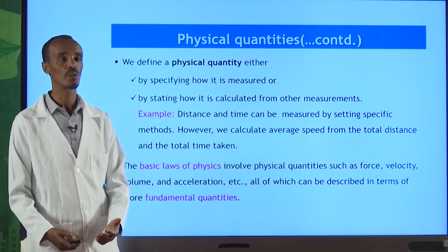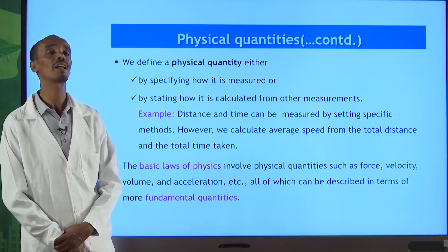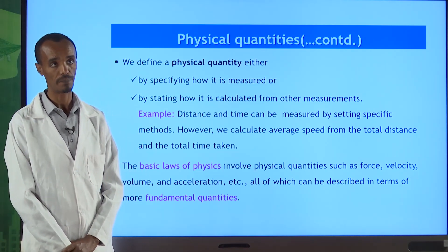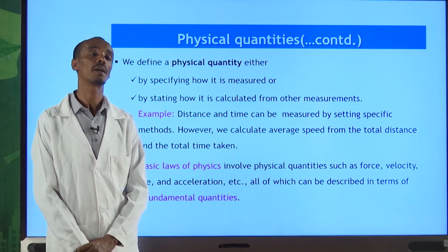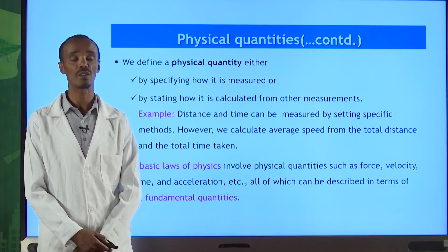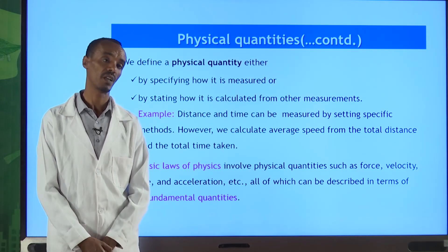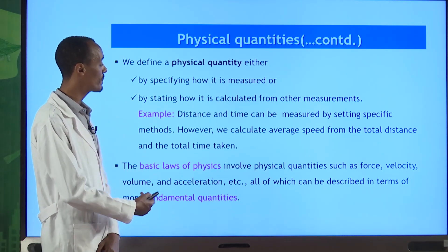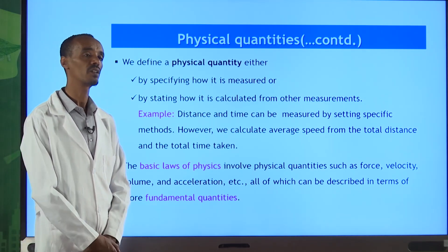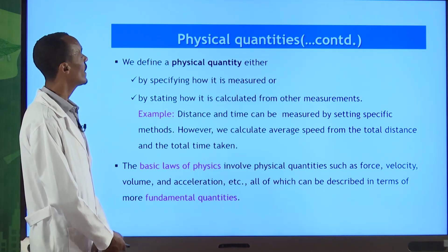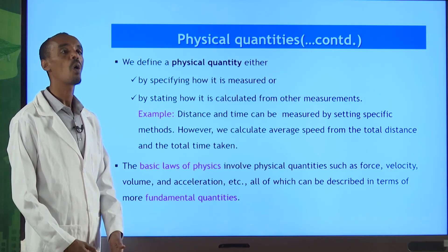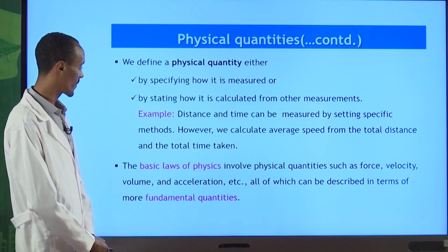You can use a watch or clock to take the time to cover the distance from Addis to Adama. But you cannot directly measure speed — you need time and distance, take their ratio, and calculate what we call speed. So a physical quantity can either be defined directly by measuring or by calculating it from another physical quantity.